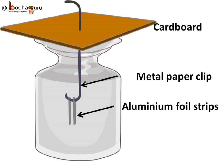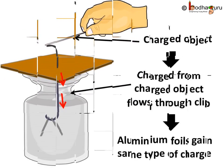How do we know whether an object is charged or not? Let us make a small device. Take a small glass jar, a cardboard slightly bigger than the mouth of the jar, one metallic paper clip, and two small aluminum foil strips around four to five centimeters long and one centimeter wide. Open out the clip and insert the two aluminum foil strips at one end, making sure the two strips are close but not touching each other. Insert the other end of the clip into the cardboard so it is perpendicular to it and hanging down.